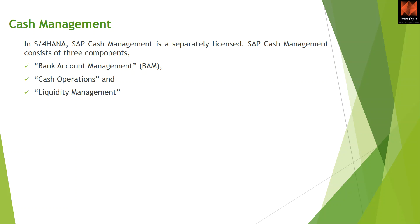In S4 HANA, cash management is a separately licensed tool. It consists of three components: bank account management, cash operations, and liquidity management. I will only explain a little bit of cash operations. Bank account management is completely a new area — it has undergone a lot of change from ECC to S4. Liquidity management is a part of the treasury function.